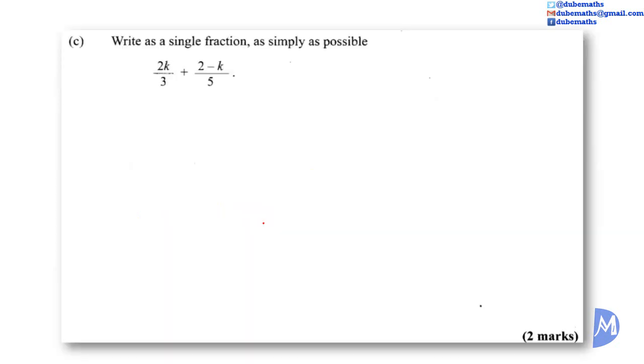Part C. The LCM of 3 and 5 is 15, so we're going to express both fractions over the LCM. To get the first fraction over 15, we multiply the denominator by 5, so we need to multiply the numerator by 5 as well. 2K by 5 is equal to 10K. We add it to the second fraction over 15. 5 by 3 is equal to 15, so we multiply 3 by 2 minus K. We have both fractions over the same denominator, so we can simply add the numerators together.